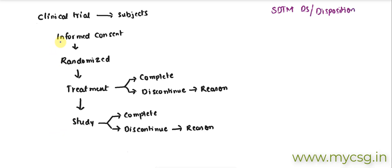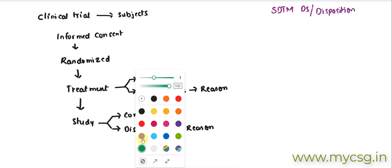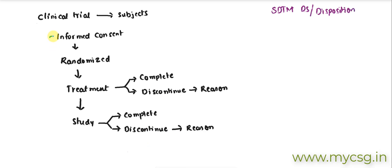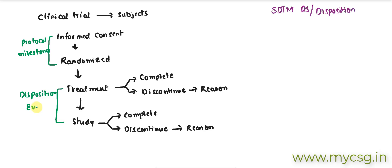We call informed consent and randomization as protocol milestones. These two will be called protocol milestones, whereas the subject's decision to complete or discontinue the treatment or study we call disposition events. So treatment completion or study completion decisions are disposition events, and informed consent and randomization are protocol milestones.